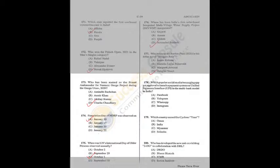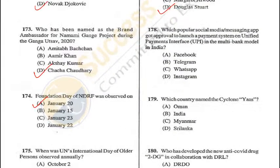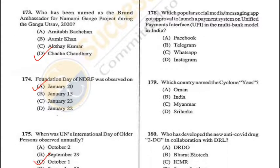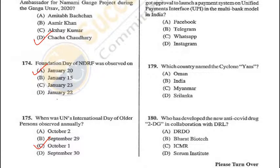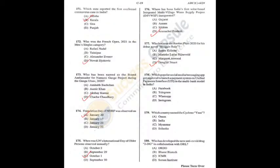Question 178: Facebook got approval to launch a payment system on the Unified Payments Interface in multi-bank model in India — A (Facebook) is the correct answer. Question 179: Cyclone Yaas — the name was given by Oman; it means Jasmine in English — A is the correct answer. Question 180: Who developed the new anti-COVID drug 2-DG (2-deoxy-D-glucose)? It was developed by DRDO's Institute of Nuclear Medicine and Allied Sciences, granted approval in May 2021 — A is the answer.